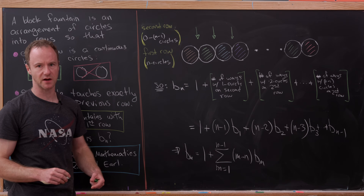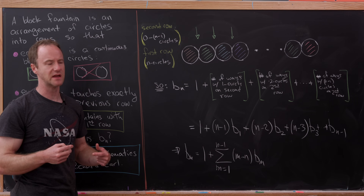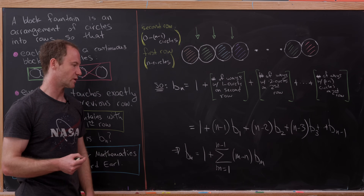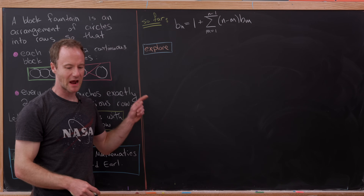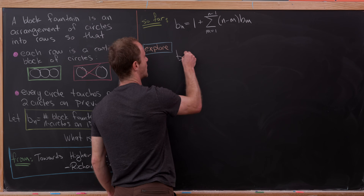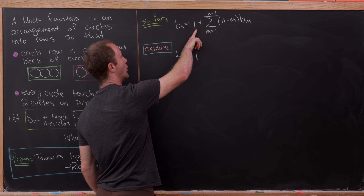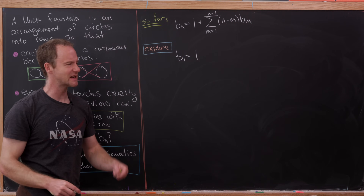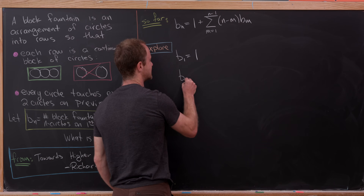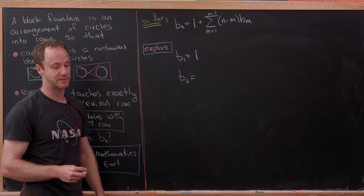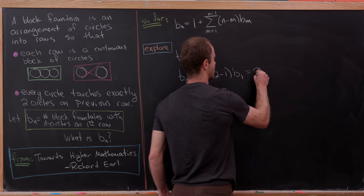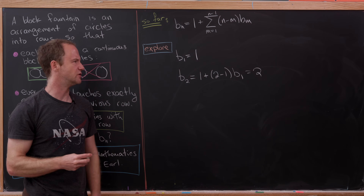We have this nice recursion. Let's see if the numbers from drawing pictures correspond to this recursion. b_1 is clearly 1, which equals 1 plus an empty sum. For b_2: by pictures it's 2, and the recursion gives 1 plus (2 minus 1) times b_1, which is 1 plus 1 = 2. The formula matches.